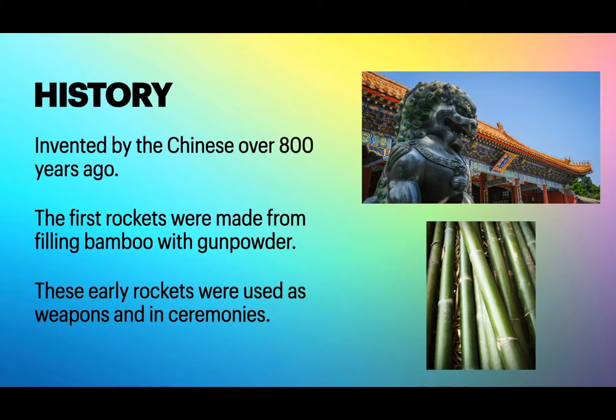Rockets were invented by the Chinese in the 1200s. These early rockets were made from filling bamboo with gunpowder and then some kind of projectile. The gunpowder was lit and the projectile went flying. These early rockets were essentially the first cannons and fireworks.